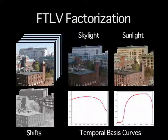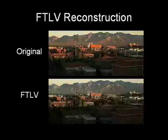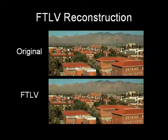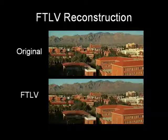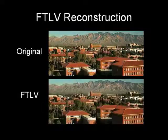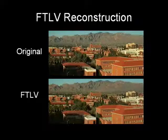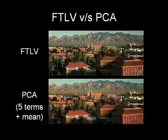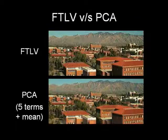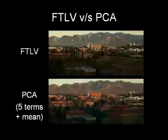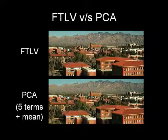The final FTLV consists of just three images, two basis curves, and a compressed representation for shadows. Here we show that the FTLV accurately reproduces the illumination changes of the original sequence. A comparison to traditional principal component analysis demonstrates that, for the same reconstruction error, FTLV produces higher fidelity results, especially along shadow boundaries.